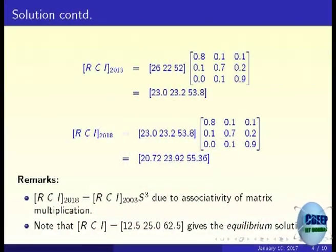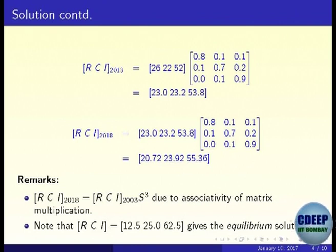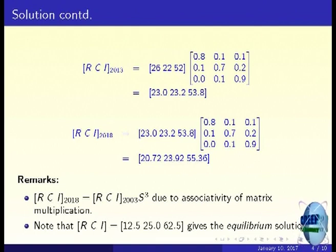That is the result for 2008. For 2013, use the result of 2008 and apply the same matrix to estimate 2013. Finally, for 2018 the estimate is approximately 20.7% — about 21% residential, about 24% commercial, and about 55% industrial. This is how the dynamics of land use are likely to change over the years.